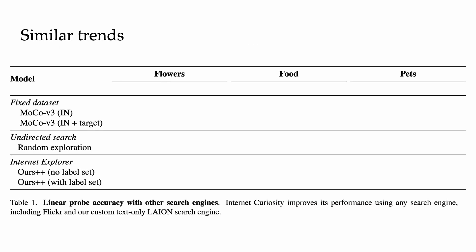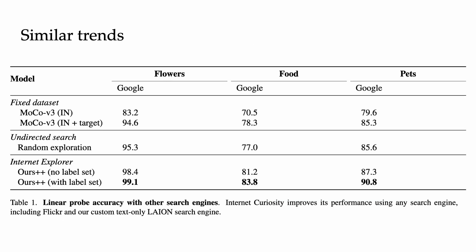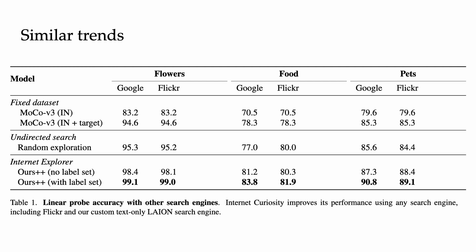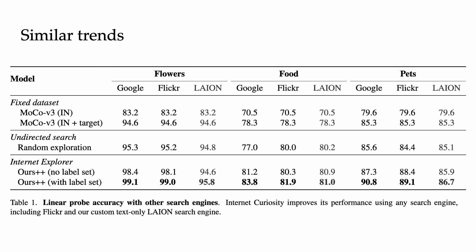We find similar trends regardless of whether you use Google Images, Flickr photo search, or our custom Leon search engine. Random search isn't effective with any engine, and Internet Explorer still improves significantly with each. We find that Google is best, likely due to it having indexed the largest pool of images.